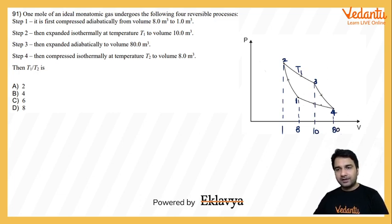And then uske baad finally T2 temperature par 4 se 1 process, aapki isothermal compression ho jayegi. So question humse poochh raha hai, ki T1 and T2 ka ratio kya hai.